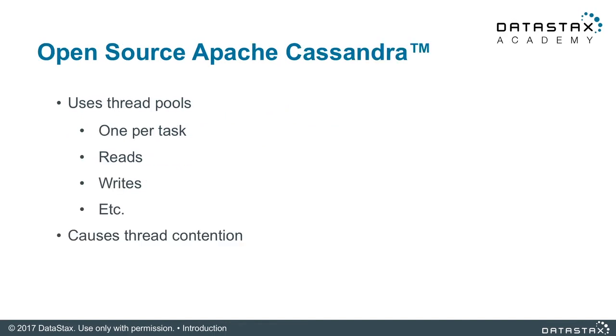Open source Apache Cassandra utilizes thread pools as its underlying task-based execution style. It creates one thread per task and recycles these threads within a pool. As new tasks come in, threads are pulled from the pool and the natural operating system thread management kicks in. The OS can preempt threads, pause, resume them, and assign them to different cores as execution continues.